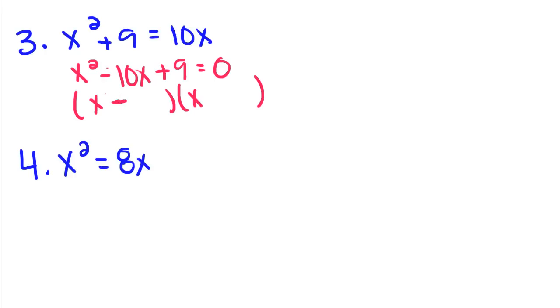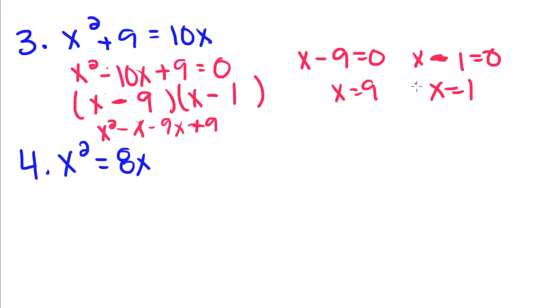Since it has to be negative, that means both of these have to be negative. A negative times a negative is going to give you a positive. And if you check that, you'd find out that you'd get x squared minus x minus 9x plus 9. Then we set each one of these factors, x minus 9 equal to 0, x equals 9, and x equals 1.